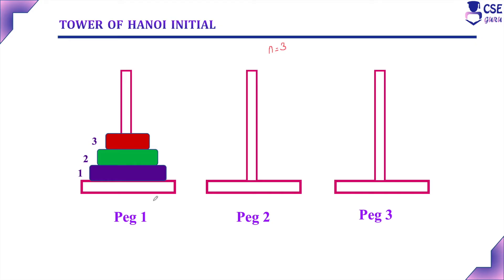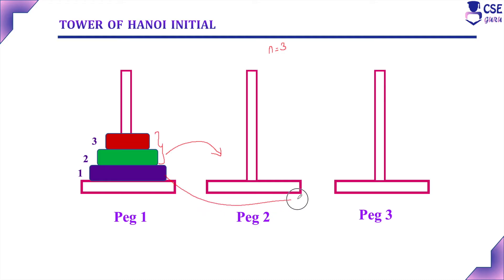First step: move N-1 disks from peg 1 to peg 2. Here N value is 3, so two disks we need to move from peg 1 to peg 2. And the third, largest disk, we can directly move from peg 1 to peg 3. And then move N-1 disks from peg 2 to peg 3.